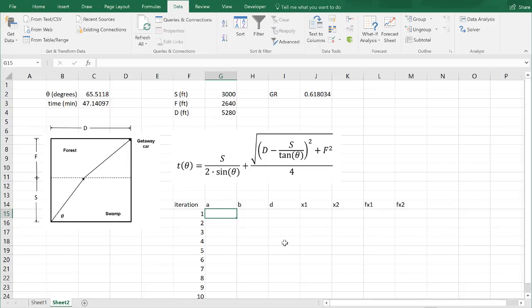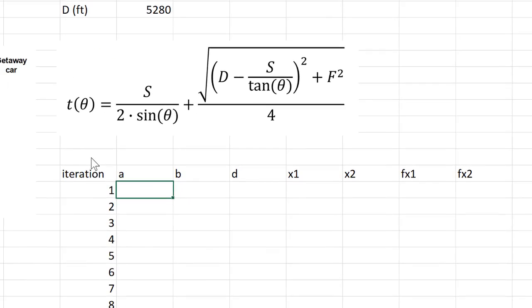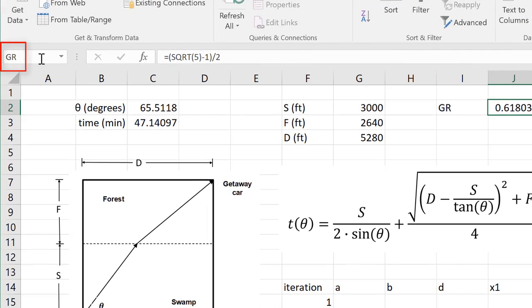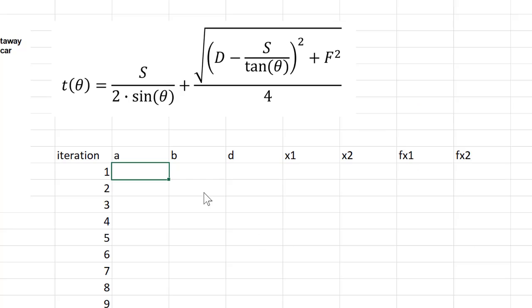So I've got this set up to put in our golden section search algorithm. I've got my golden ratio up here, which is the square root of 5 minus 1, quantity divided by 2. I've named that gr up here in the name box. Now when you're setting this up, you always have to sort of realize that these values here, the a, b, d, x1, x2, correspond to the independent variable that you're trying to,